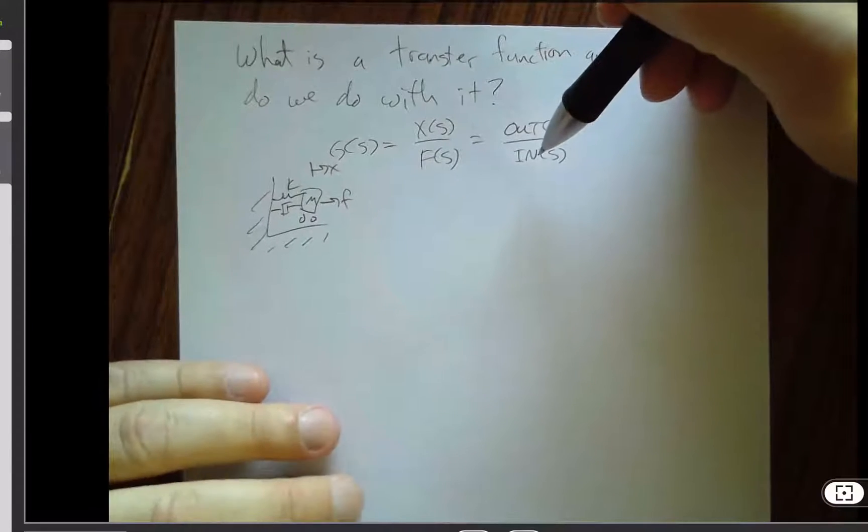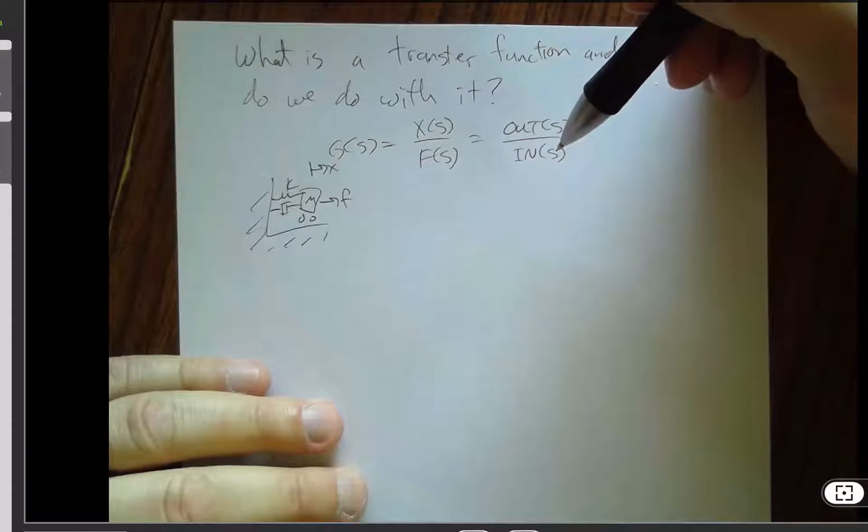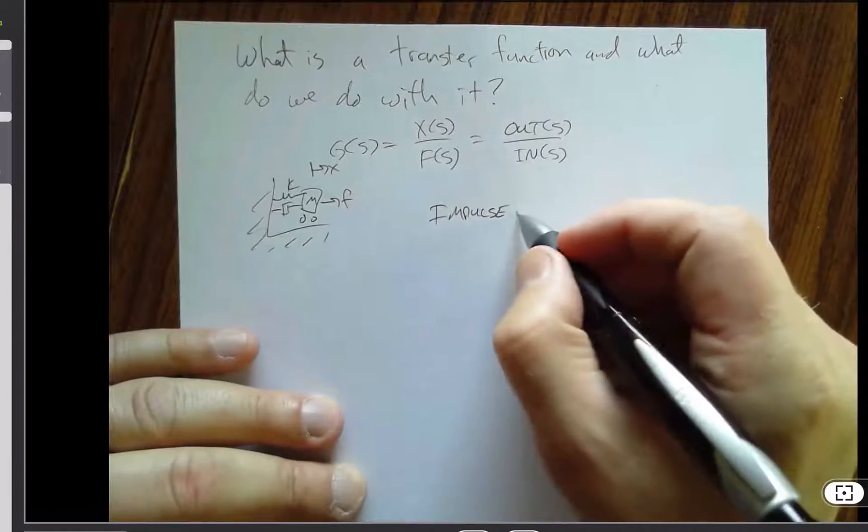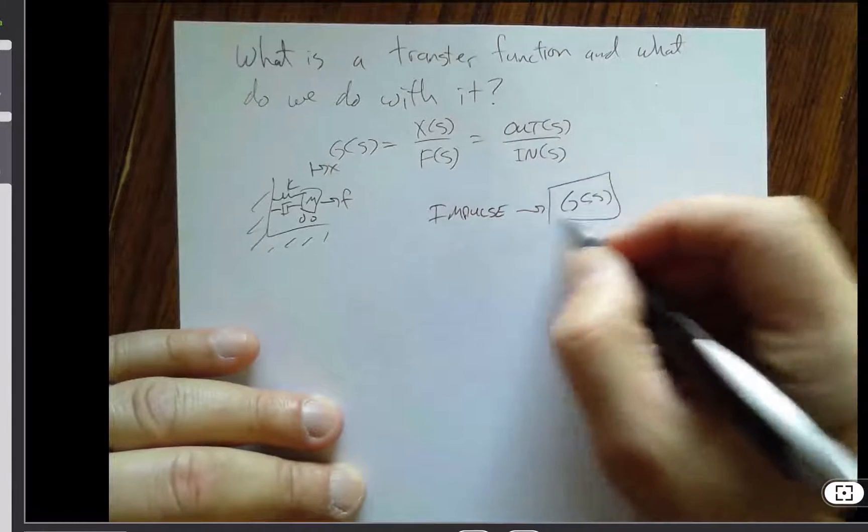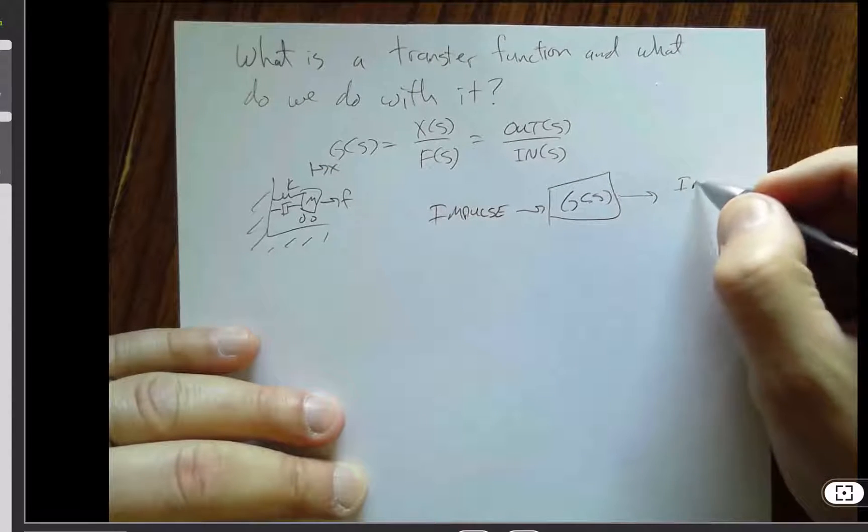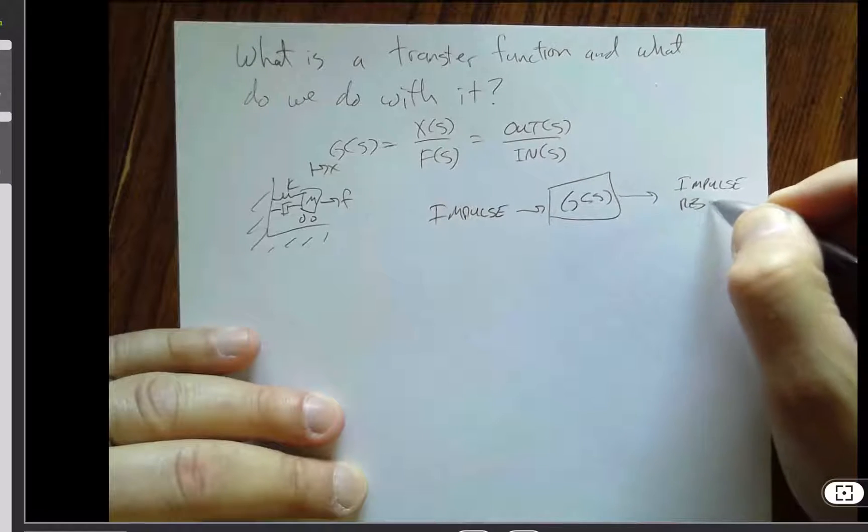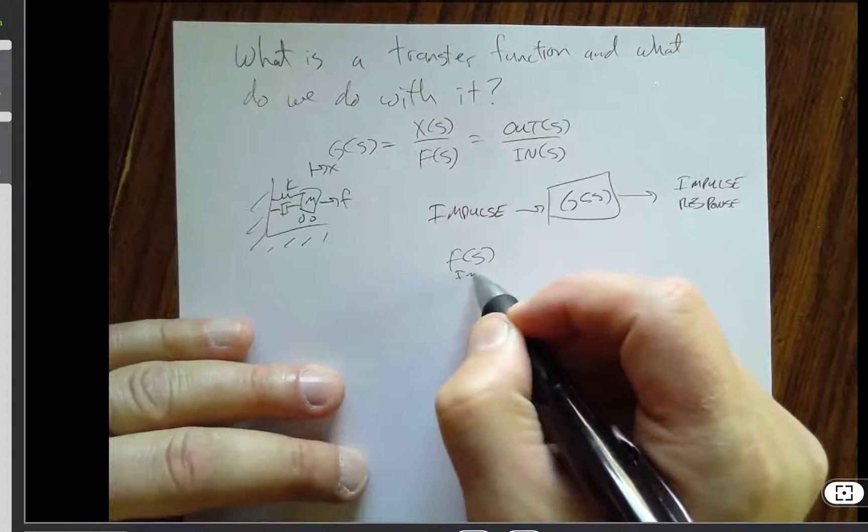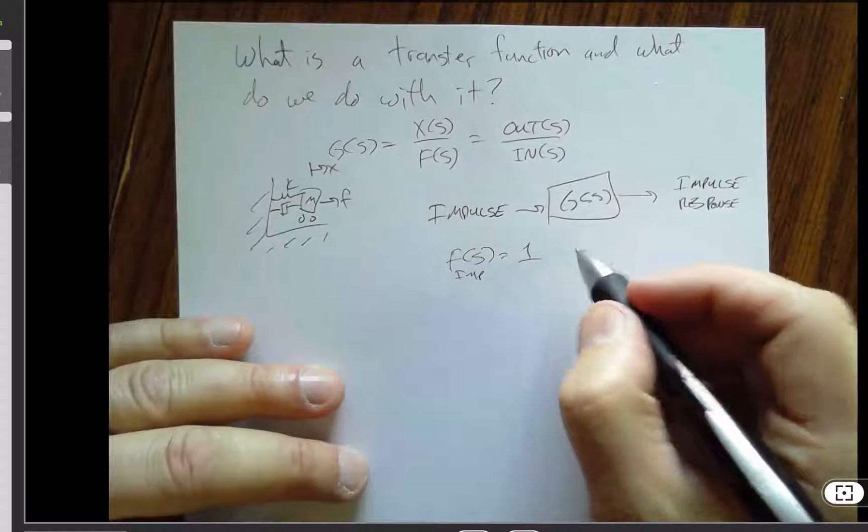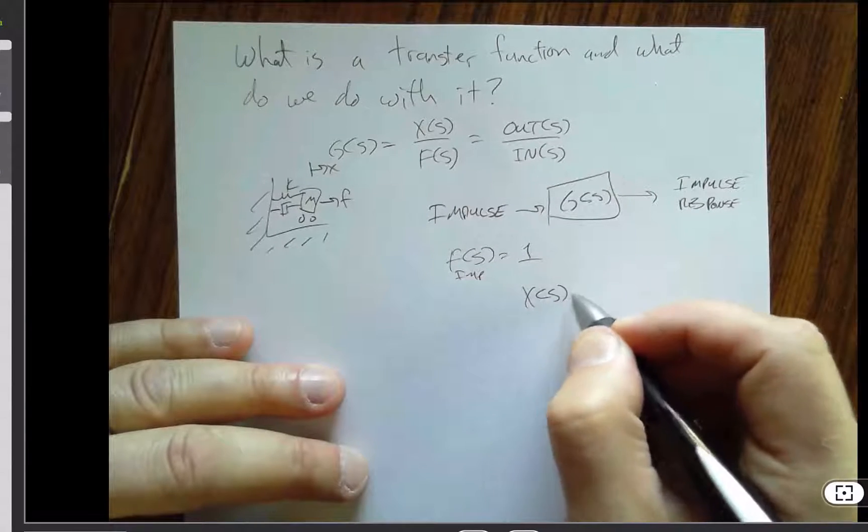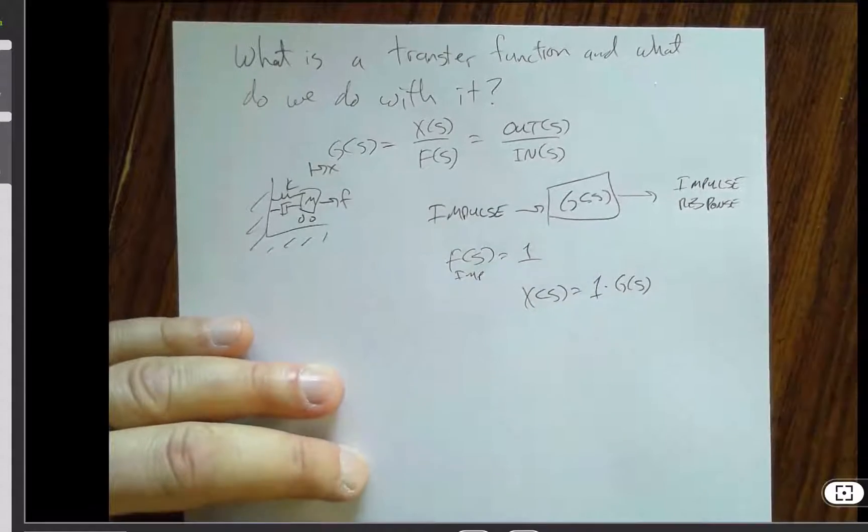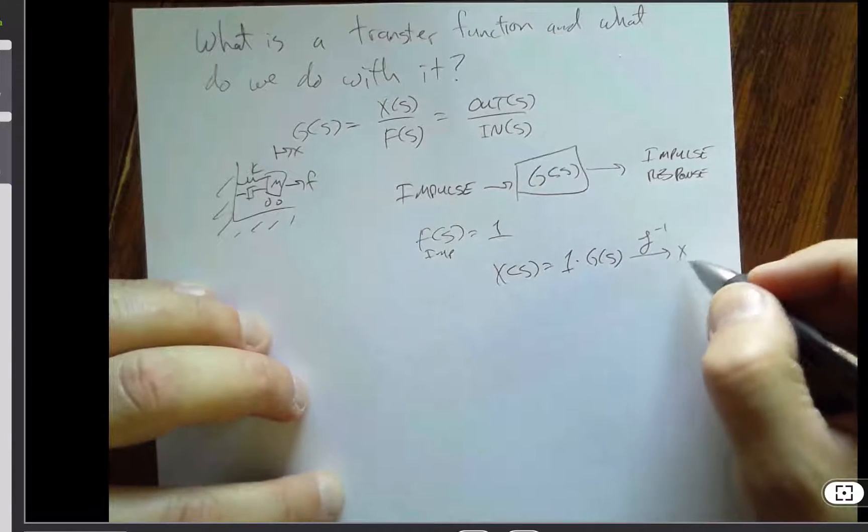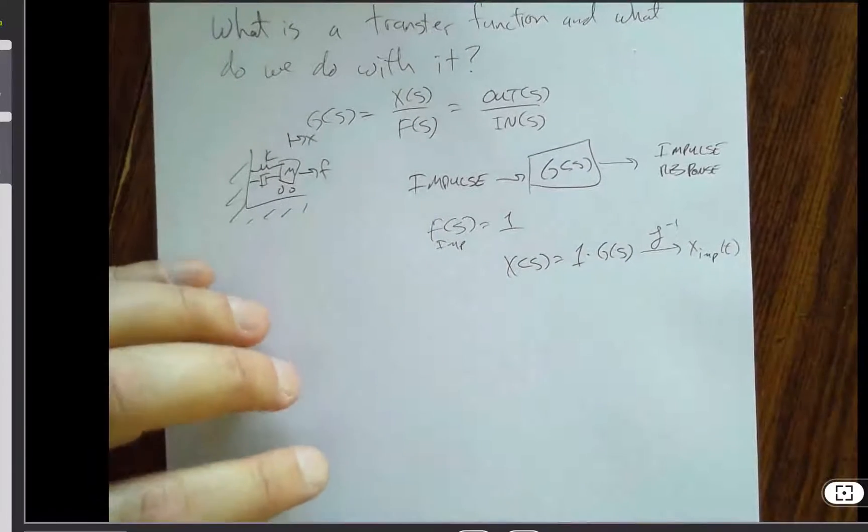Once we have the transfer function, we can then take a bunch of different inputs and get different outputs. So if I took an impulse input, for example, and ran it through g of s, then out would come the impulse response. So if I had to do that symbolically, it would turn out that f of s for an impulse is just equal to 1, and then I would multiply, so x of s would just equal 1 times g of s, and then from there I would do partial fraction expansion and inverse Laplace, and I would end up with the impulse response as a function of time.